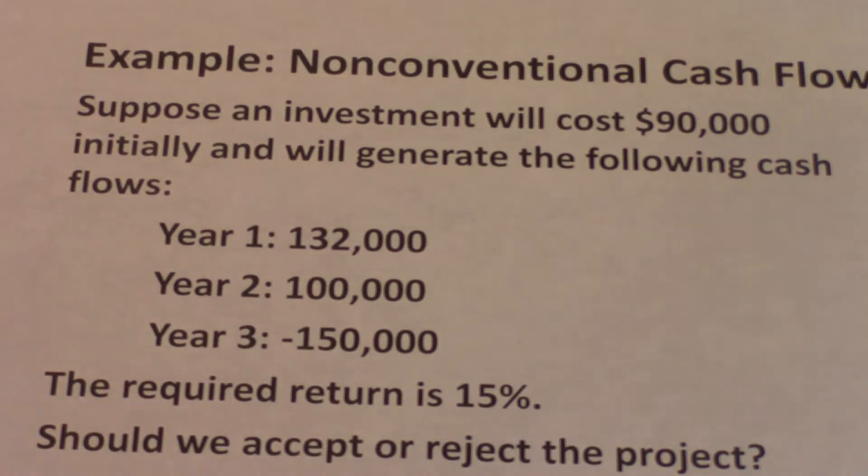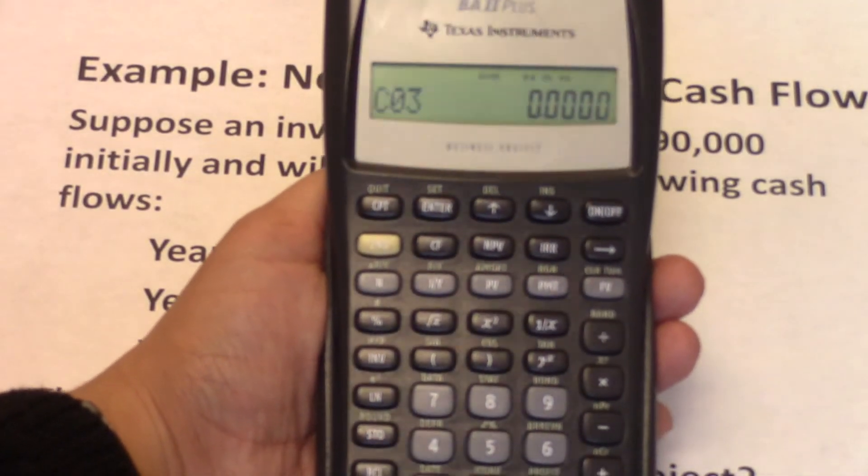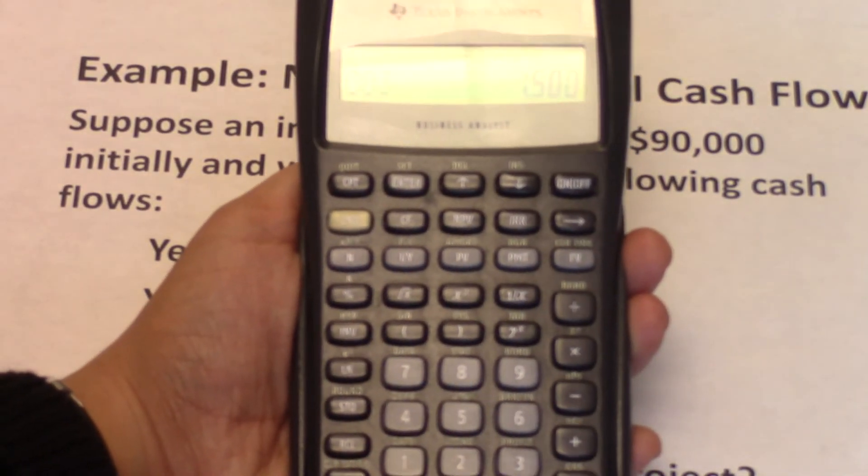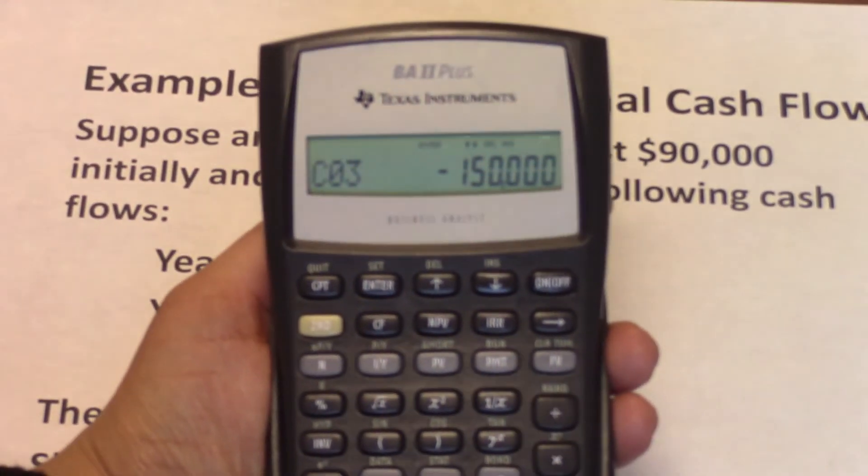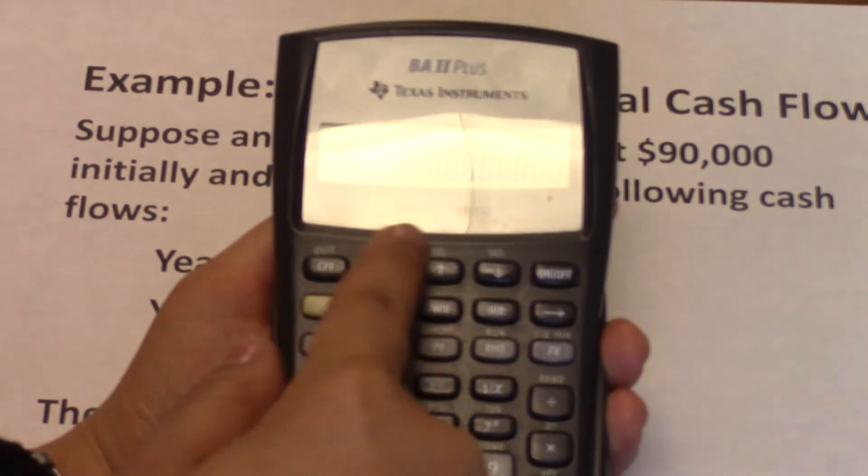And then we're asked for the cash flow year three. Cash flow year three is negative $150,000. So $150,000. Then you input it as a negative number and then enter, down arrow.